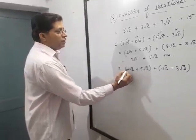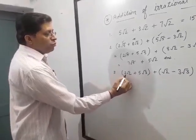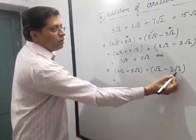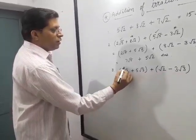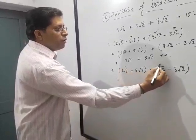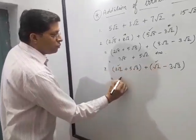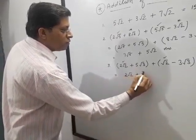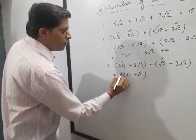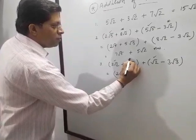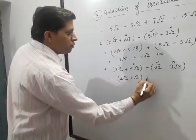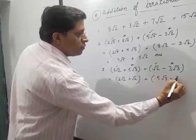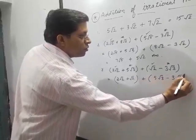So, here see here. Third question: 2 root 2 plus 5 root 3 plus root 2 minus 3 root 3. Here, see again like terms, 2 root 2 and here is root 2, 2 root 2 plus root 2. Take it in bracket. Second, these 2 are like terms. Plus sign then 5 root 3 minus 3 root 3.